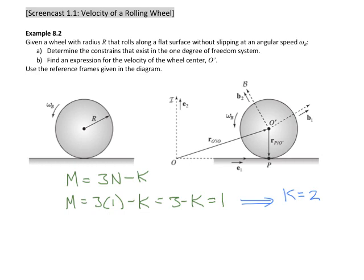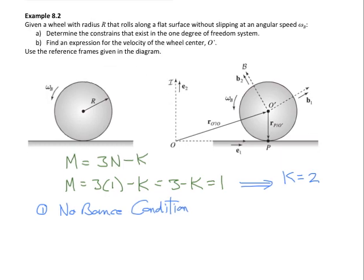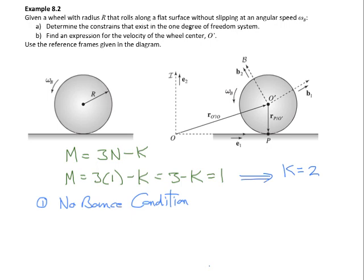Our first constraint: the center of the wheel, which we call O', can only move in the horizontal direction. If rotation is counterclockwise, the center moves left; if clockwise, it moves right. It cannot move in the vertical direction, and we call this the no-bounce condition. Mathematically, we express this by saying the inertial velocity of O' with respect to O, dotted with e sub 2 — the upward vector — equals zero.